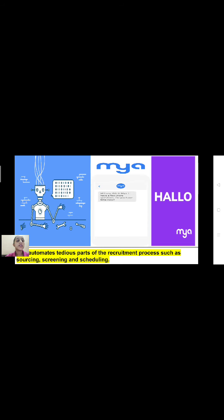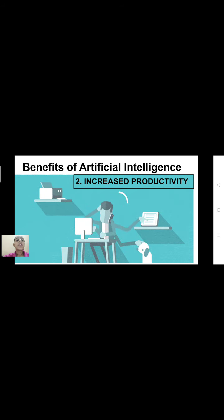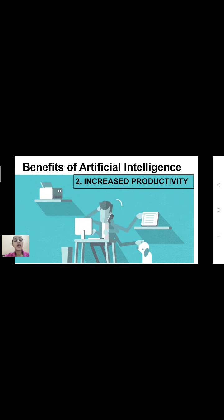The MyA app can talk to a candidate — for example saying 'Hi Lucky, this is Maya, I have a few more questions' — and Lucky can interact with the app and get directly recruited into a company. The second benefit is increased productivity. AI has become a necessity in every part of business, solving high computational tasks. For example, a legal robot that handles legal paperwork and analyzes legal contracts demonstrates how AI increases productivity.